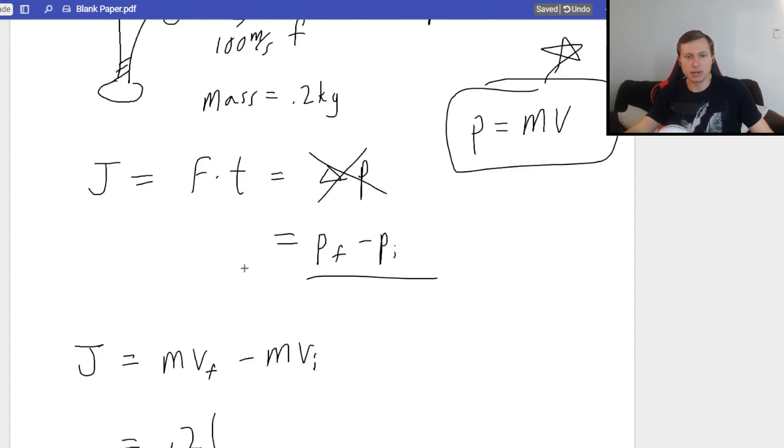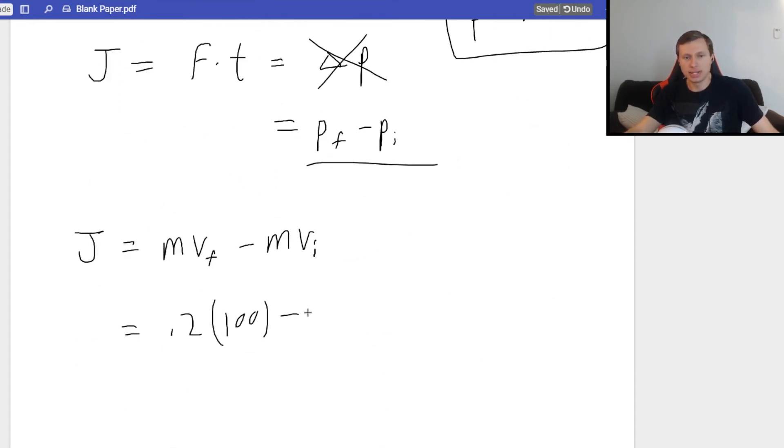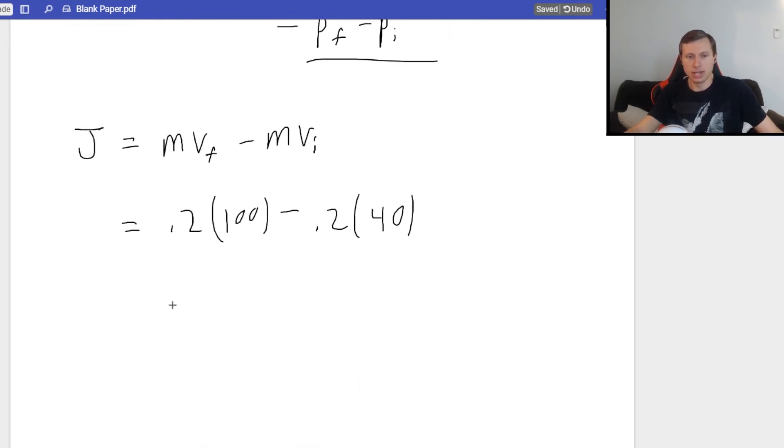Velocity final we see here is 100, minus mass 0.2 times V initial I said was 40. Okay, I can plug this in my calculator. I get 0.2 times 100 minus 0.2 times 40. I get a final answer of 12.